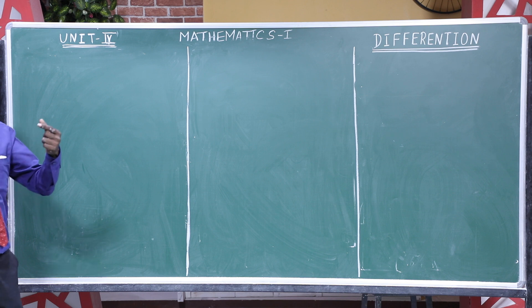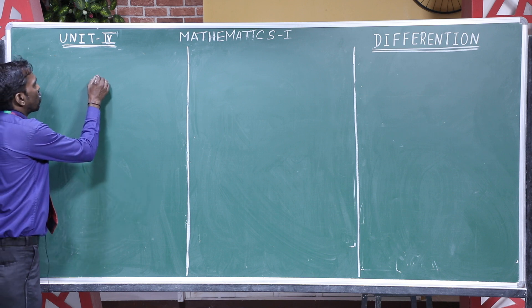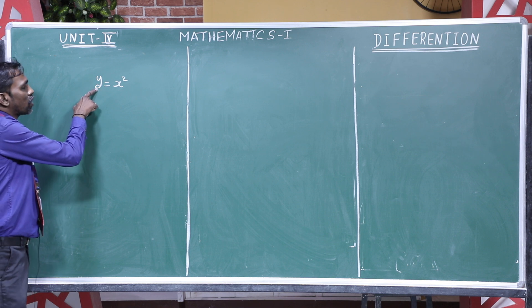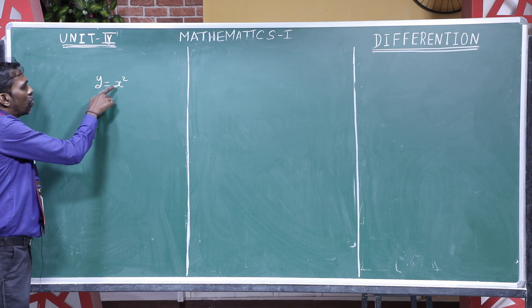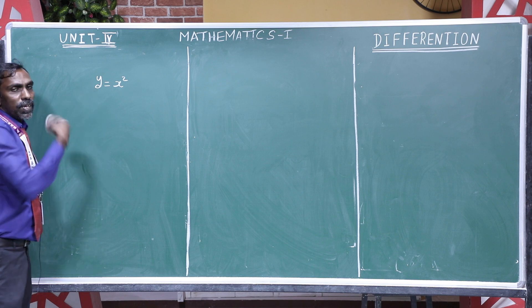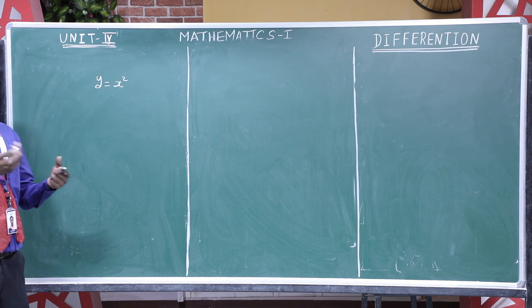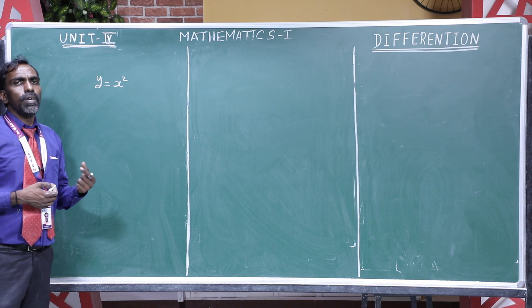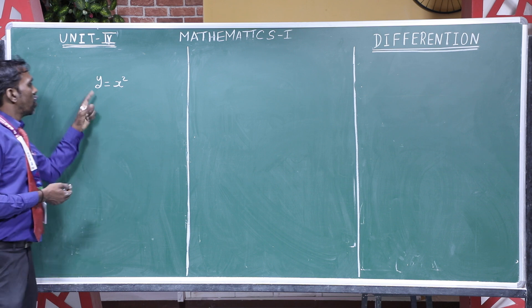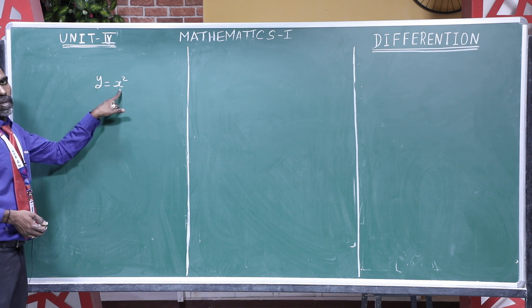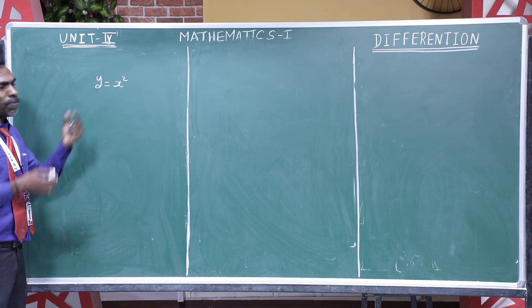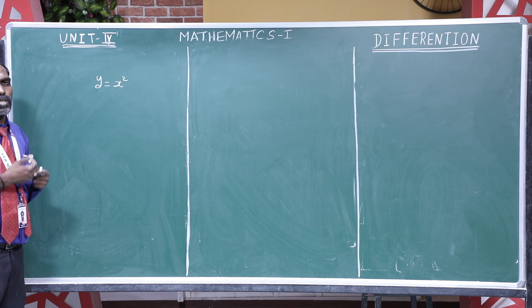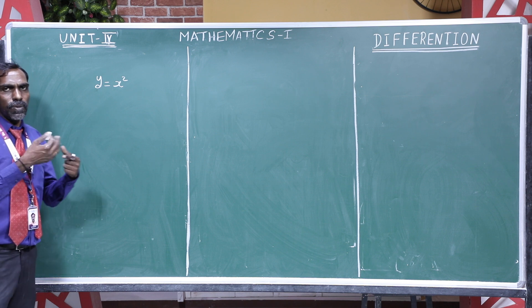For example, if you have a function y equal to x square, y is a dependent variable and x is an independent variable. You have to differentiate the function. Differentiation is nothing but the rate of change of one variable with respect to another variable. Here, y depends upon x.